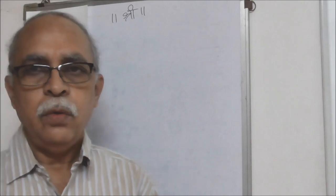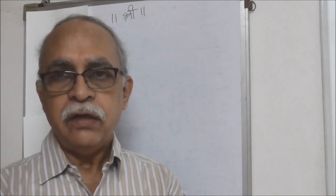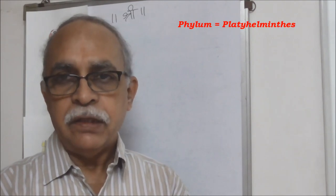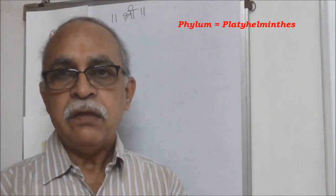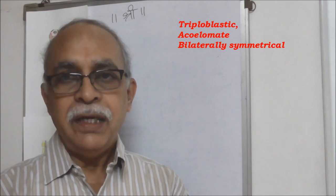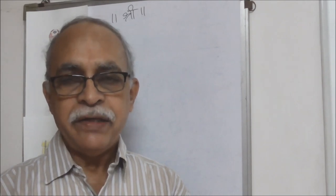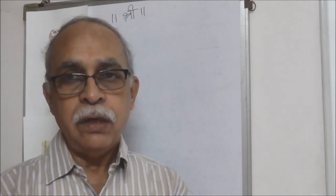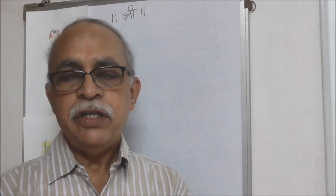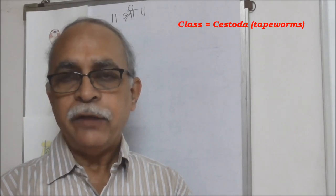In this session we will try to understand something about Taenia solium and the pathogenic invasion it causes. It's an animal that belongs to phylum Platyhelminthes — 'platy' stands for flat and 'helminth' stands for worm. So it's a flatworm: triploblastic, acoelomate, bilaterally symmetrical — presence of all three germ layers, no true coelomic cavity, and a single plane of symmetry.